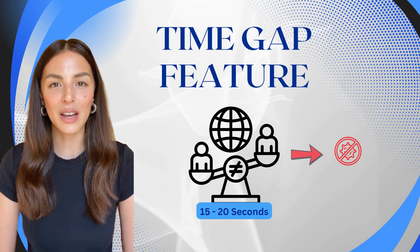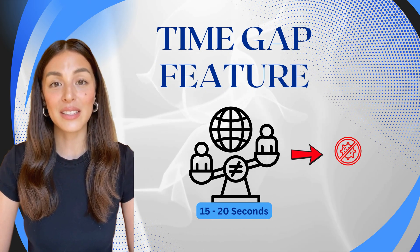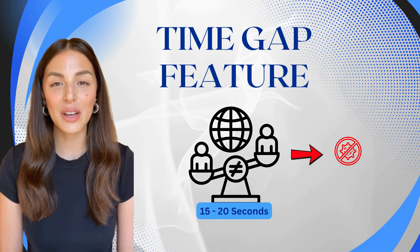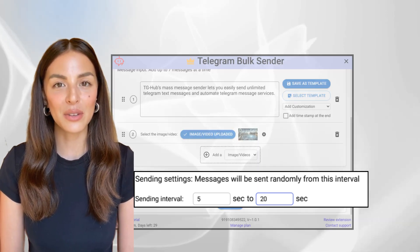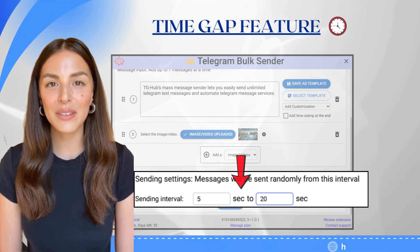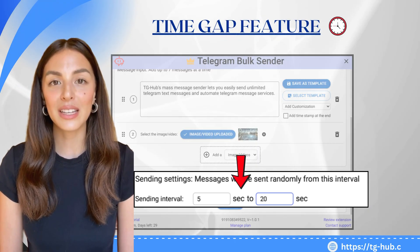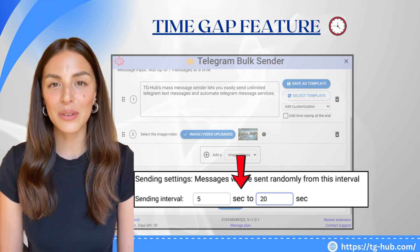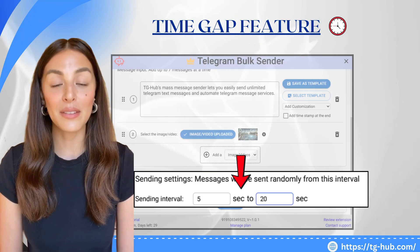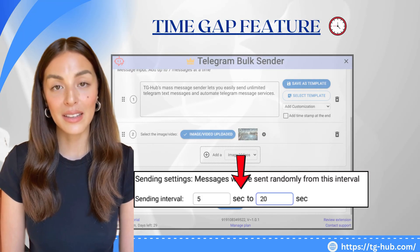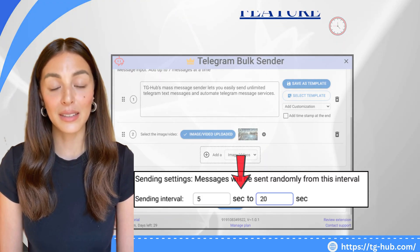To avoid detection or bans from Telegram, make use of the time gap feature. Set an interval between each message. We recommend a gap of 15 to 20 seconds for safe and smooth delivery.